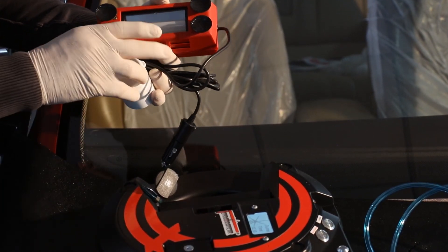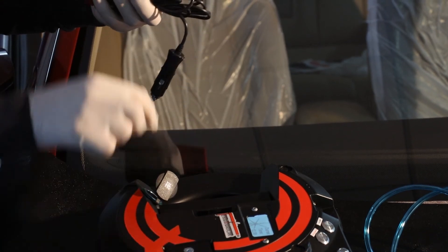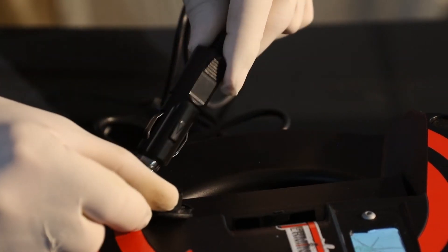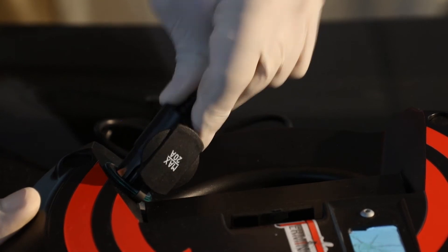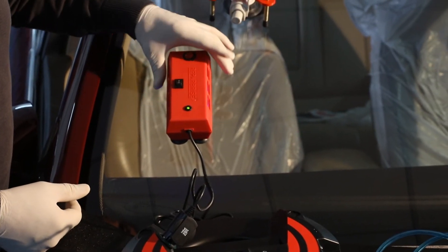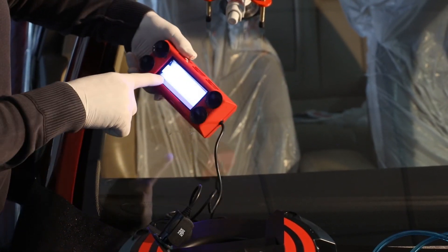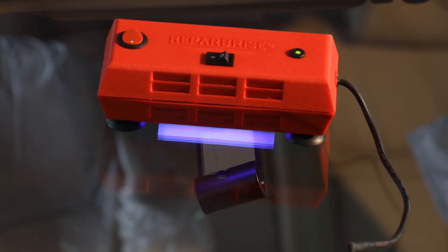First, switch on the lamp with the main button. The UV lamp is endowed with a red button timer which will stop the curing process after 10 minutes. It is also possible to let a longer curing when the red button is reversed. Position the UV lamp to the area of the repair and let it cure.